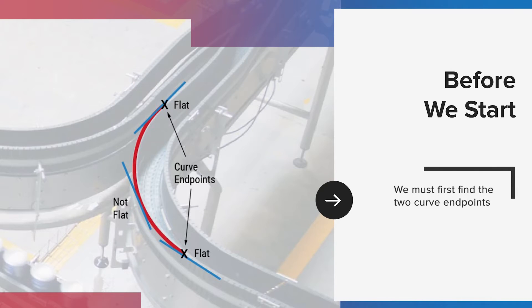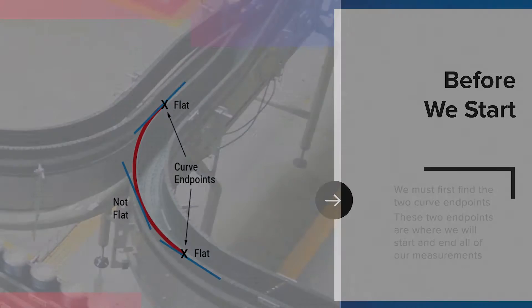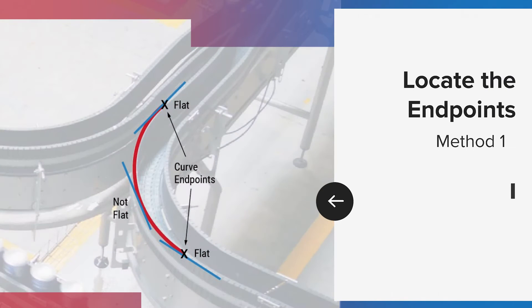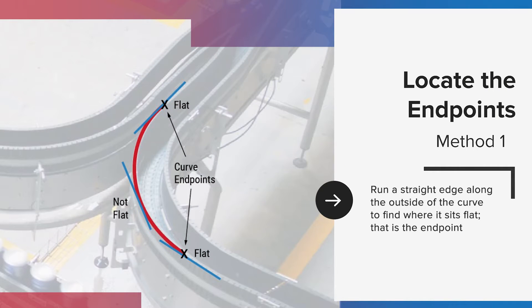Before we can start to measure, we have to find the two curve endpoints. These two endpoints are where we will start and end all of our measurements.